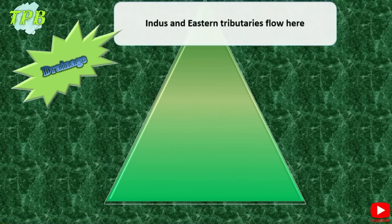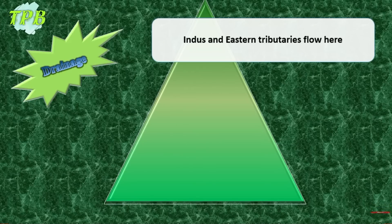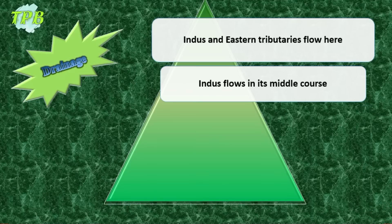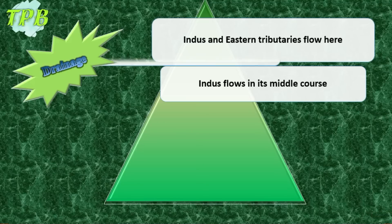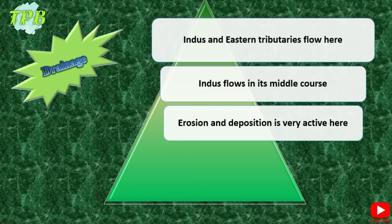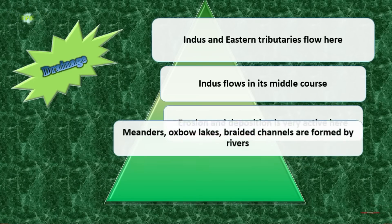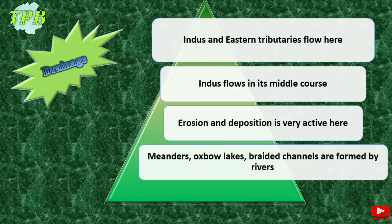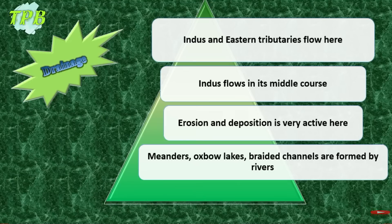As far as the drainage of the Upper Indus Plain is concerned, there is the Indus and its eastern tributaries flowing here, so water action is very high. The Indus flows in its middle course with medium speed, as the river is entering from the tall lofty mountains in the north; erosion and deposition are both very active. Landscape features like meanders, oxbow lakes, and braided channels are formed by the rivers. Candidates should learn the definitions of these features, and should be able to identify them through photographs.